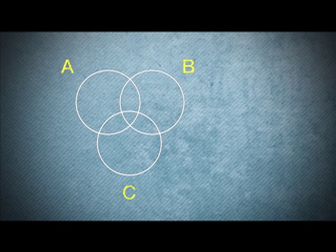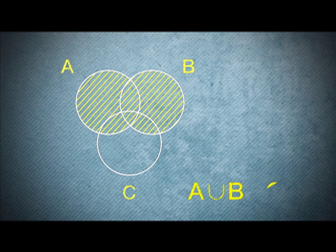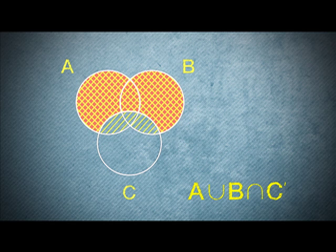For the second diagram, first, we find A union B. And then, we determine C complement. And the answer is the overlapping region.